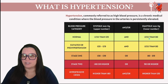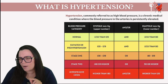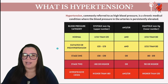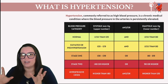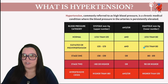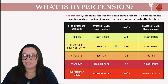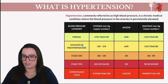When your blood pressure starts to inch up a little bit but isn't quite high yet, that's what we call elevated or pre-hypertension. That's when your systolic pressure ranges between 120 to 129 while the diastolic pressure remains under 80. Again, both of these have to be met in order for it to be elevated or pre-hypertension.